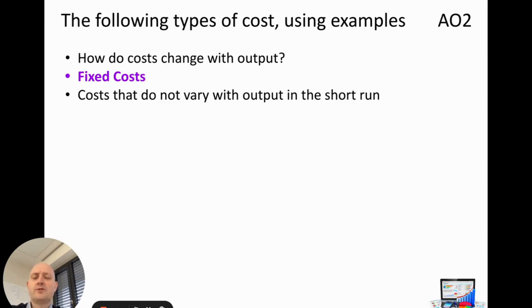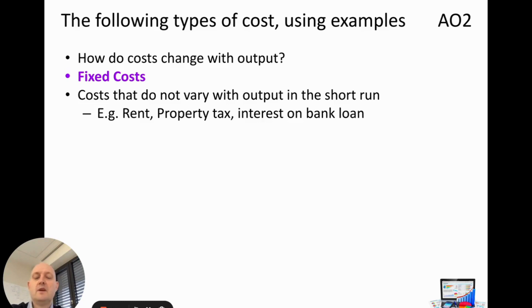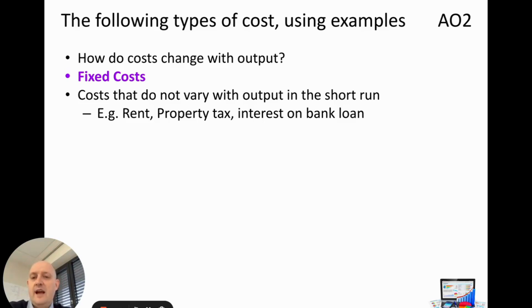Fixed costs are costs that do not vary with output in the short run. They're effectively fixed — as the name would suggest, it doesn't matter how much we produce, the cost will always be the same. For example, rent: it doesn't matter how much we produce, we have to pay the rent whether we produce zero or a million units.